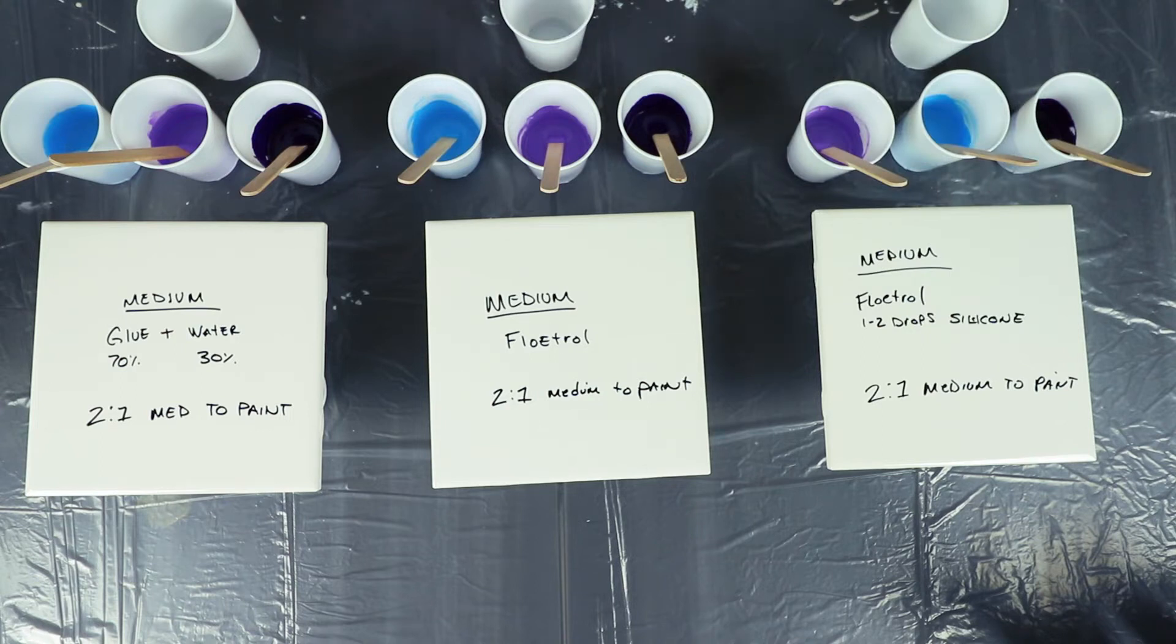I do understand that with ring pours typically you don't want to use silicone because it's going to create a lot of cells, and the idea of a ring pour is having those nice crisp lines. But it is also a look that some people do enjoy, so I was going to go through all three and we're going to see what we get.